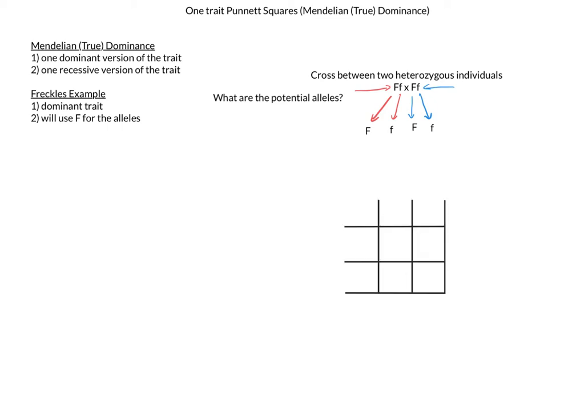Now let's make the actual Punnett square, and since this is just a one trait cross, there should be four squares in the middle. I can now make a line across the top far left box and place my male and female signs in here. Then I can add the specific potential alleles to the corresponding boxes for both the male and the female individual in my cross.